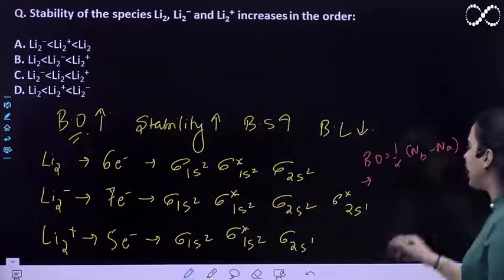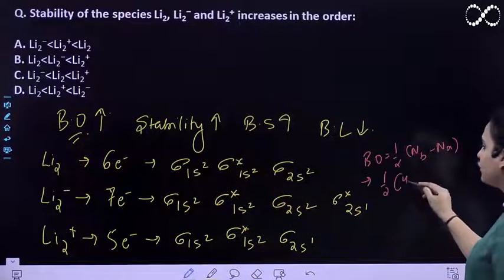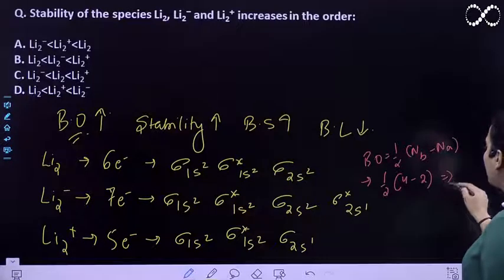So here in bonding, there are 4 electrons. 4 minus 2, the bond order is 1.